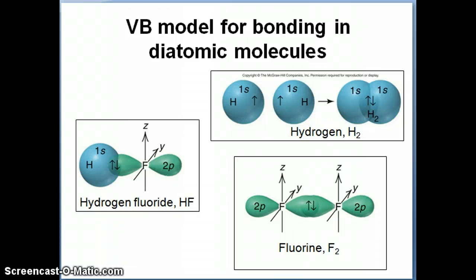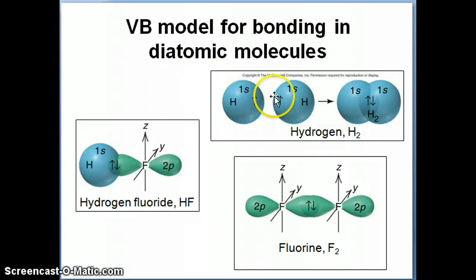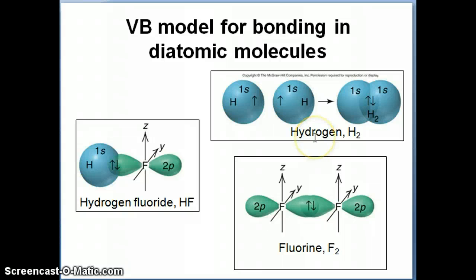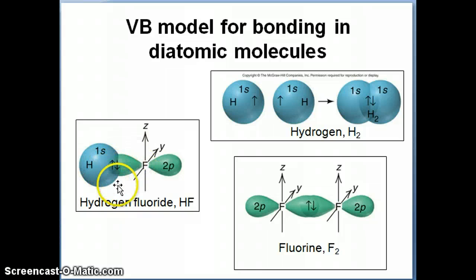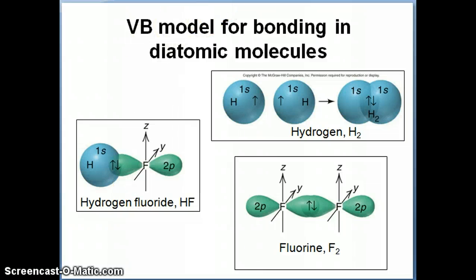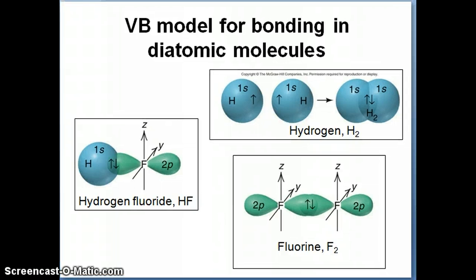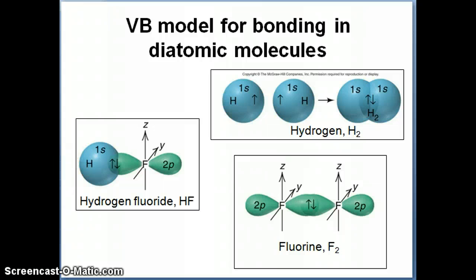Hi everyone. Here I want to continue the discussion about the valence bond model for bonding in diatomic molecules. In the first video we talked about this model — it's fairly straightforward. You just need a valence electron in a valence orbital with a single electron, and then the two electrons pair up forming that bond. In theory we can calculate the strength of this bond if we know the wave functions, but the math level required is a bit more advanced than what we have right now.